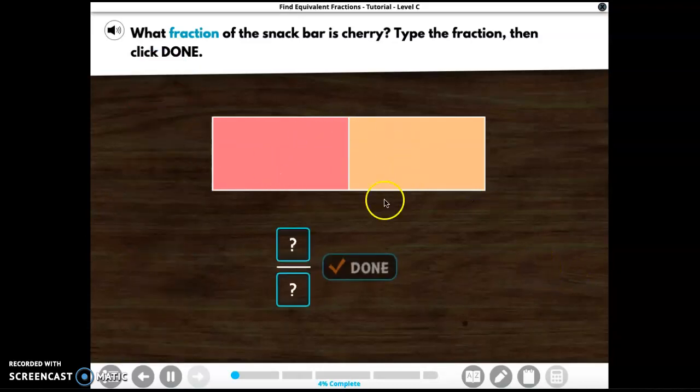Well, we have two parts, so I know that that's two, because there's two parts. And she said that only this part is cherry, so that's one, right? So it's one half of the bar.